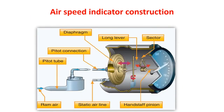Airspeed indicator construction: The airspeed indicator consists of an airtight case, a pressure capsule or diaphragm as the pressure sensing element, two connectors — a pitot connection and a static line. The mechanism consists of a link, lever, sector gear, pinion gear, and needle.